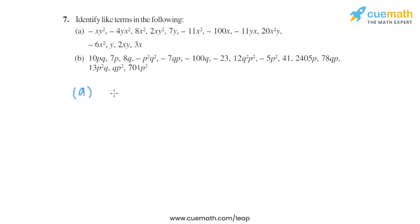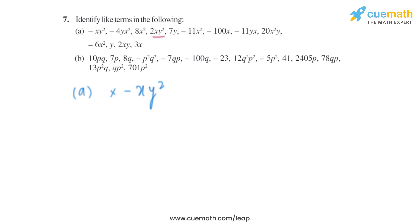Let's start with part A. The first term given in the question is minus XY square. We have to find the like term of minus XY square, which is 2XY square. As we can see, they both have the same variable X and Y, and the power is also the same, so its like term is 2XY square.